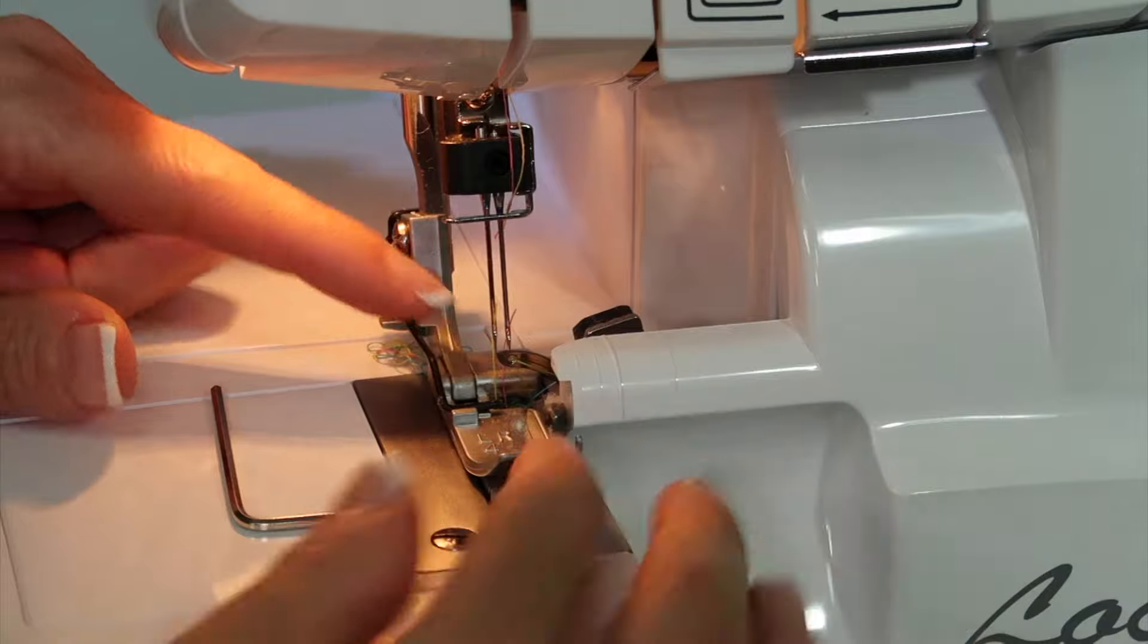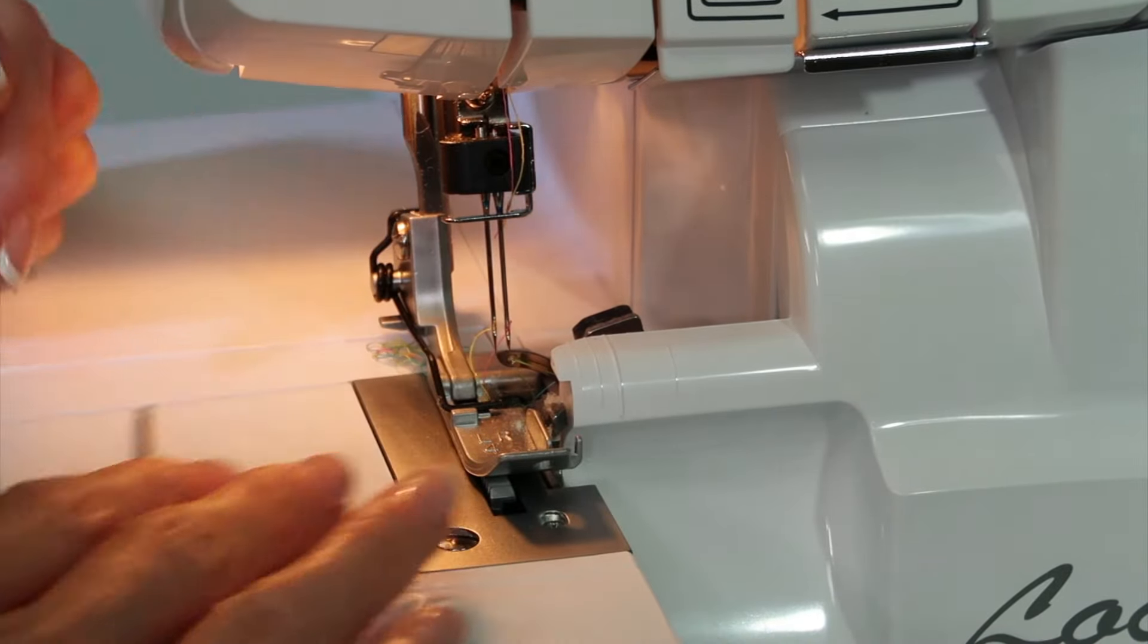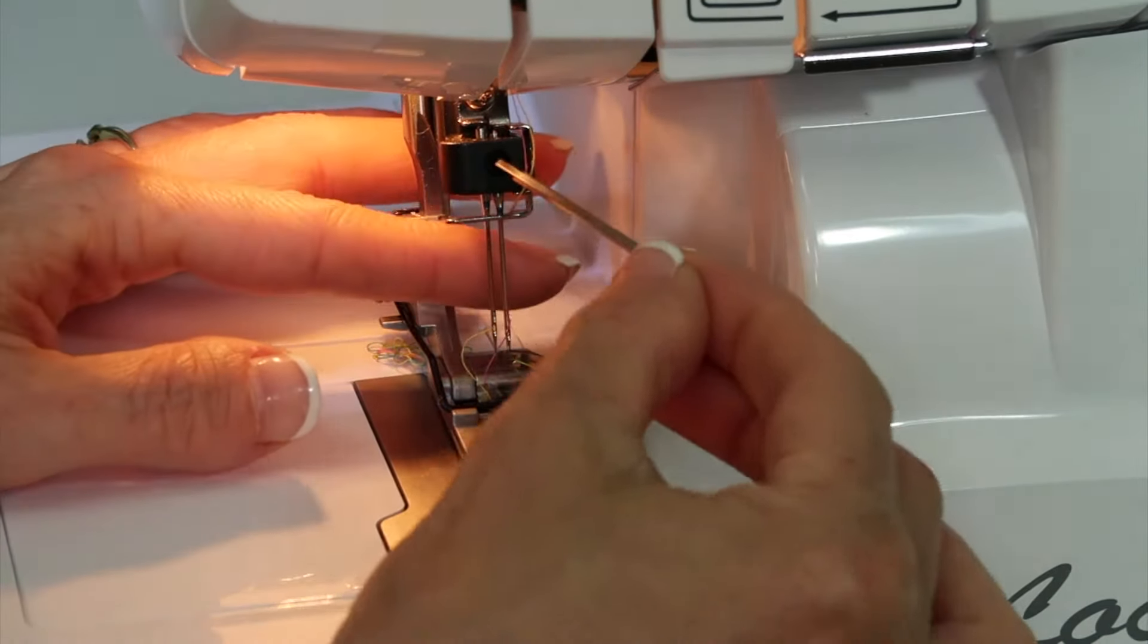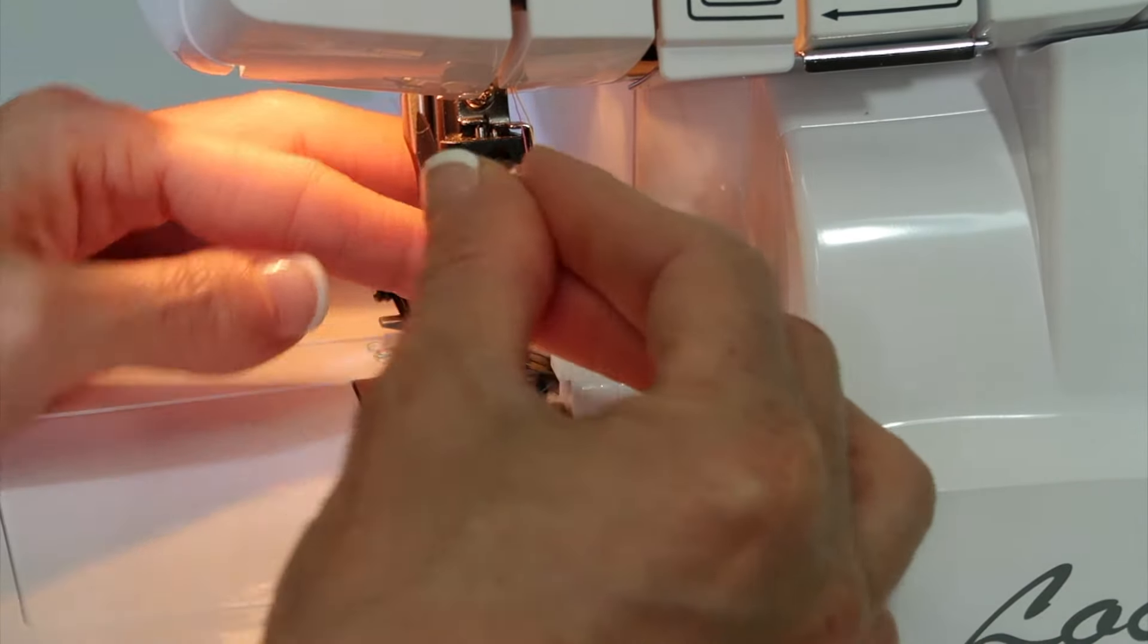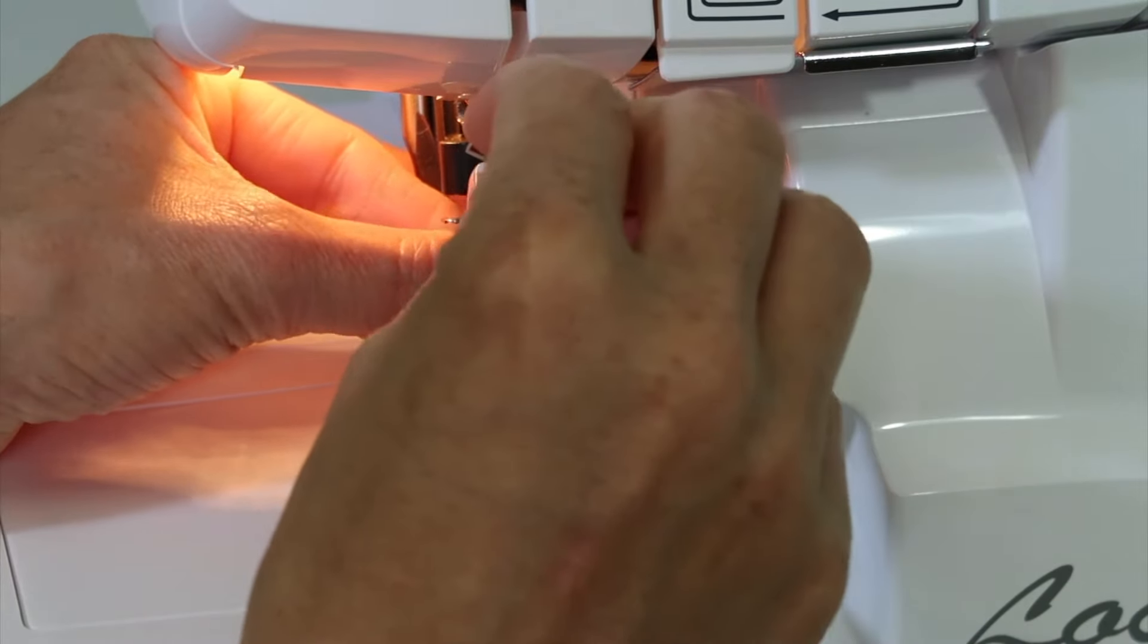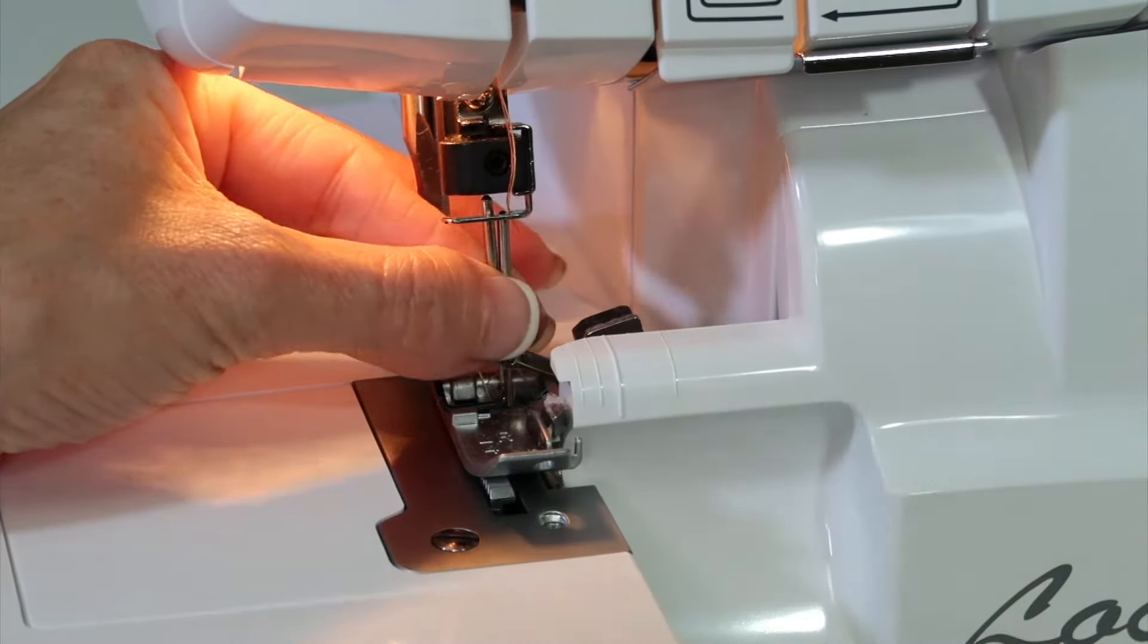If you lower down the presser foot, you get a little bit more room going on here, but you'll notice that there's one screw at the top of the needle. When you take them out, you're going to need to loosen and then hold onto both of them at the same time.